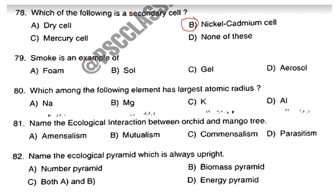Question number 79. Smoke is an example of Option D: Aerosol. Question number 80. Which among the following elements has the largest atomic radius? The answer is Option C: Potassium. Question number 81. Name the ecological interaction between orchid and mango tree. The answer is Option C: Commensalism.